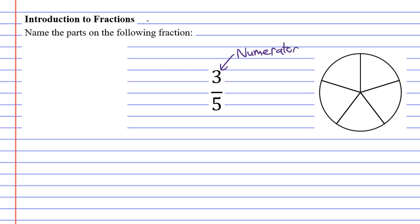The number at the bottom, or the 5, is known as the denominator.